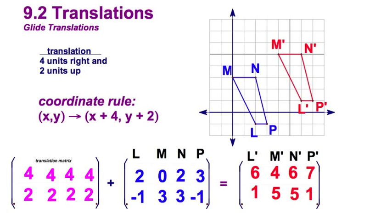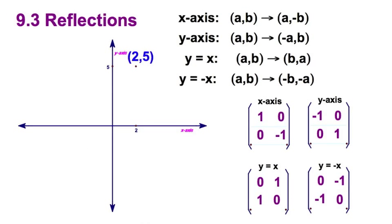Now, let's look at reflections. In section 9.3, we dealt with reflections. Make sure you've got all of these in your notes. You've got four different sets of coordinate rules, and you have four different transformation matrices here. That's reflecting over the x-axis. There's your coordinate rule, and this is your matrix.